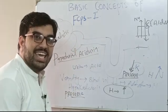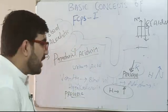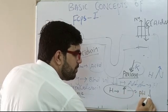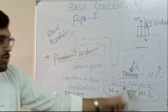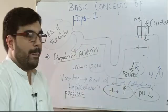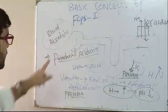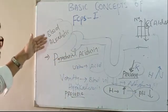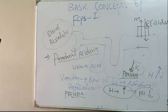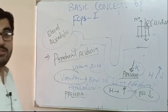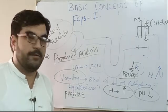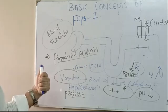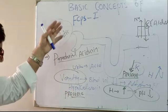When hydrogen ions are excreted in the urine, since hydrogen ion concentration and pH are inversely related, urine pH goes down — the urine becomes acidic. This is paradoxical aciduria: urine is acidic while the blood remains alkalotic. The underlying cause is vomiting.